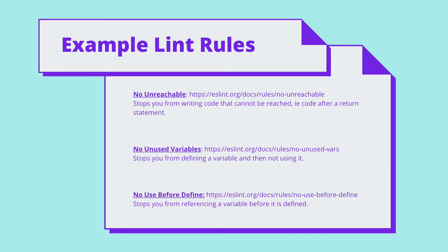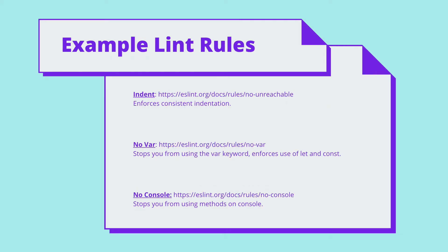There are a whole host of rules available in ESLint, but let's take a look at some small examples. The no-unreachable rule stops you from writing code that can't be reached — for example, if you have code that appears after a return statement, it will flag it as a warning or an error. No-unused-variable stops you from defining a variable and then not using it anywhere. And no-use-before-define stops you from referencing a variable before it's been defined. The indent rule enforces consistent indentation. The no-var rule stops you from using the var keyword, enforcing the use of let and const, which were introduced with ES6. And no-console stops you from using methods on console.